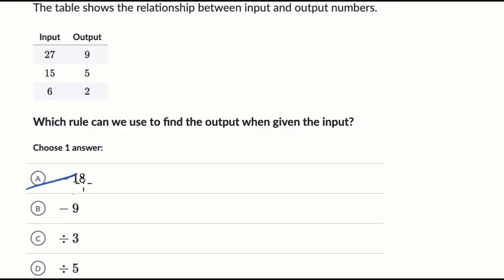See, subtracting nine. Well, that one doesn't work even on the first one right over here. If I do 27 minus nine, it doesn't equal nine. It equals 18. It actually doesn't work for any of these. So we could rule that one out as well.